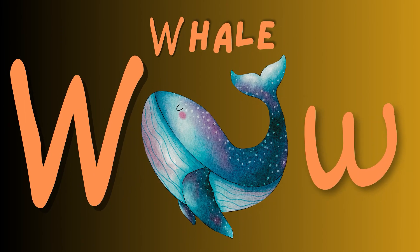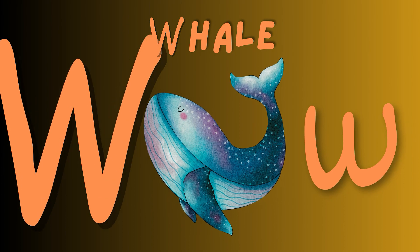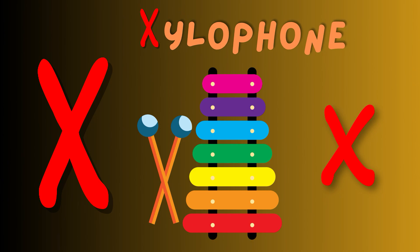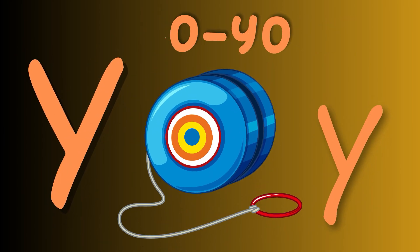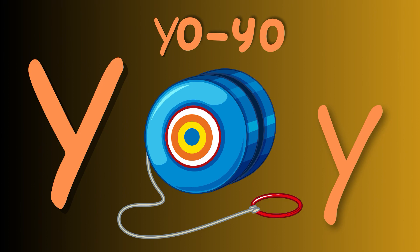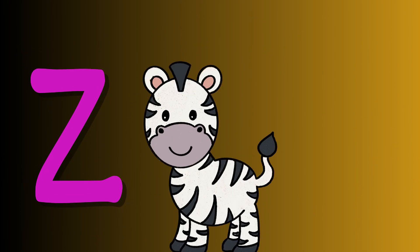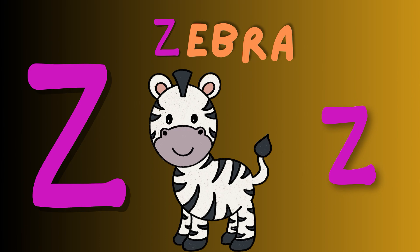W is for whale. Whale, whale. This is a whale. Whale, whale. X is for xylophone. Xylophone, xylophone. This is a xylophone. Xylophone, xylophone. Y is for yo-yo. Yo-yo, yo-yo. This is a yo-yo. Yo-yo, yo-yo. Z is for zebra. Zebra, zebra. This is a zebra. Zebra, zebra.